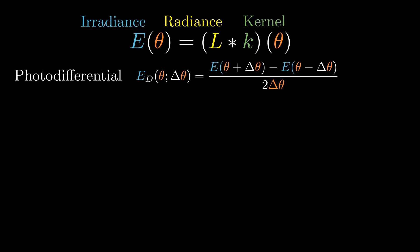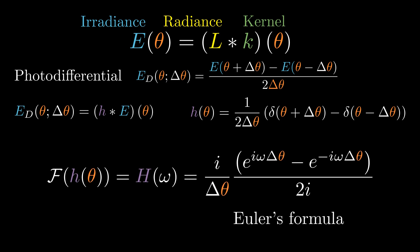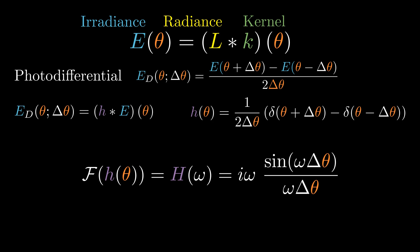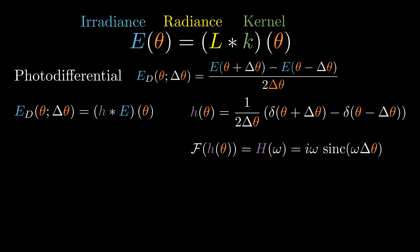How do we resolve this challenge? Let's take a closer look at the photodifferential equation. This can be expressed as a convolution between the irradiance function E(θ) and another function h(θ). But it's not obvious what role this function h plays. So we examine its Fourier transform. Shuffling the terms around, we recognize that part of the expression corresponds to sin(ωΔθ). This result comes from Euler's formula. Next, by multiplying the numerator and denominator by ω, we get a familiar form. This expression is called the sinc function, the Fourier transform of a box filter. The Fourier transform reveals that the function h is effectively performing a derivative operation combined with applying a box filter. According to the convolution theorem, multiplication in the frequency domain corresponds to convolution in the spatial domain.